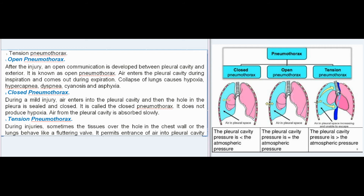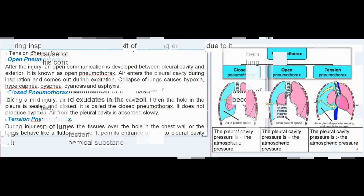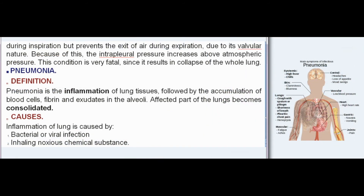In closed pneumothorax, during a mild injury, air enters the pleural cavity and then the hole in the pleura is sealed and closed. It does not produce hypoxia and air from the pleural cavity is absorbed slowly. In tension pneumothorax, tissues over the hole behave like a fluttering valve — permitting entrance of air during inspiration but preventing exit during expiration. This causes intrapleural pressure to increase above atmospheric pressure, resulting in collapse of the whole lung, which is very fatal.